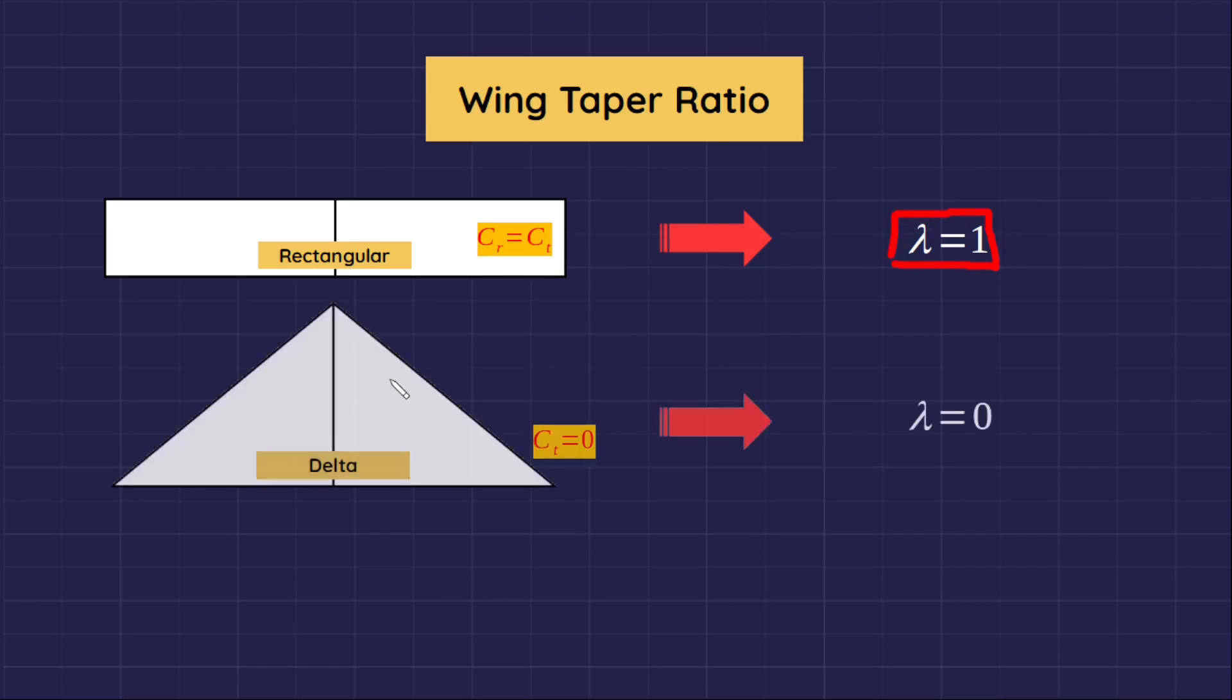For a triangle wing or delta wing, when the wing tip cord is equal to 0, then taper ratio is equal to 0.